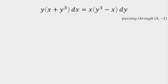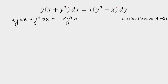Now let's solve the second curve. We have a differential equation and the curve passes through (4, −2). Expanding, we get: xy·dx + y⁴·dx = xy³·dy − x²·dy.